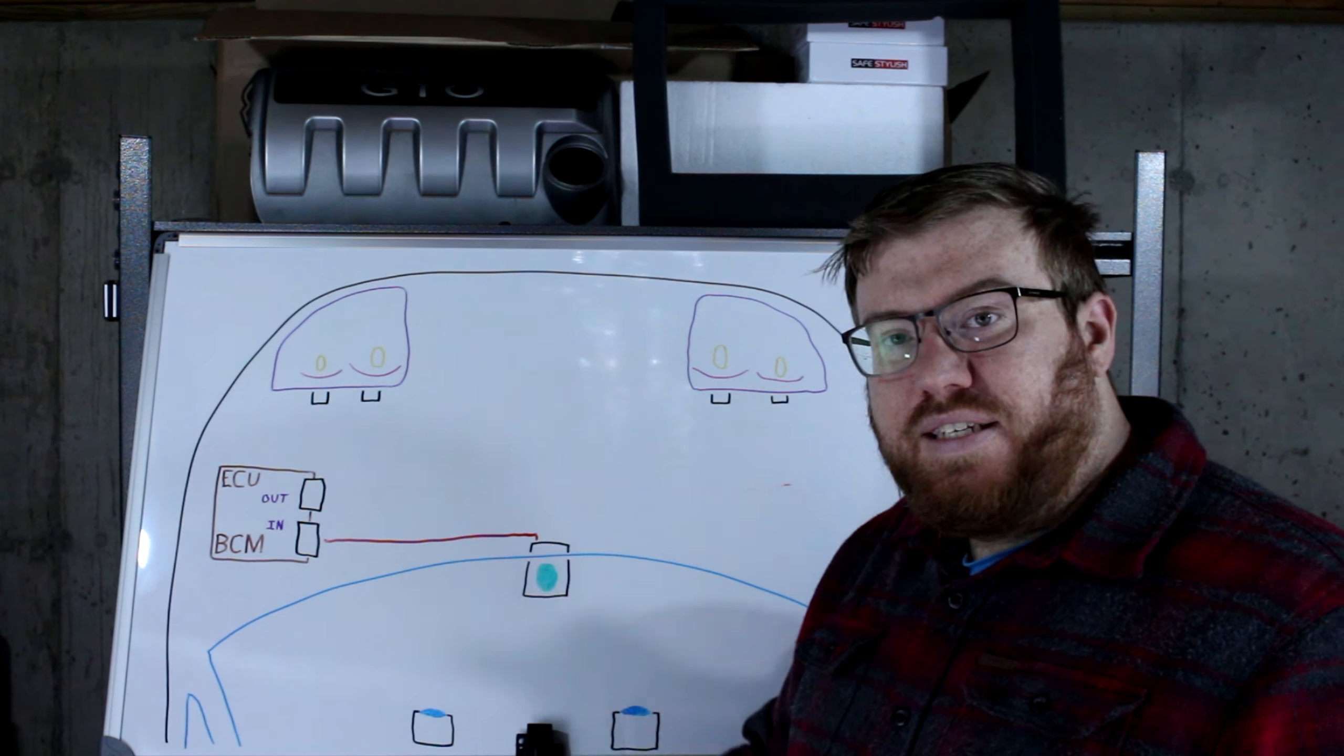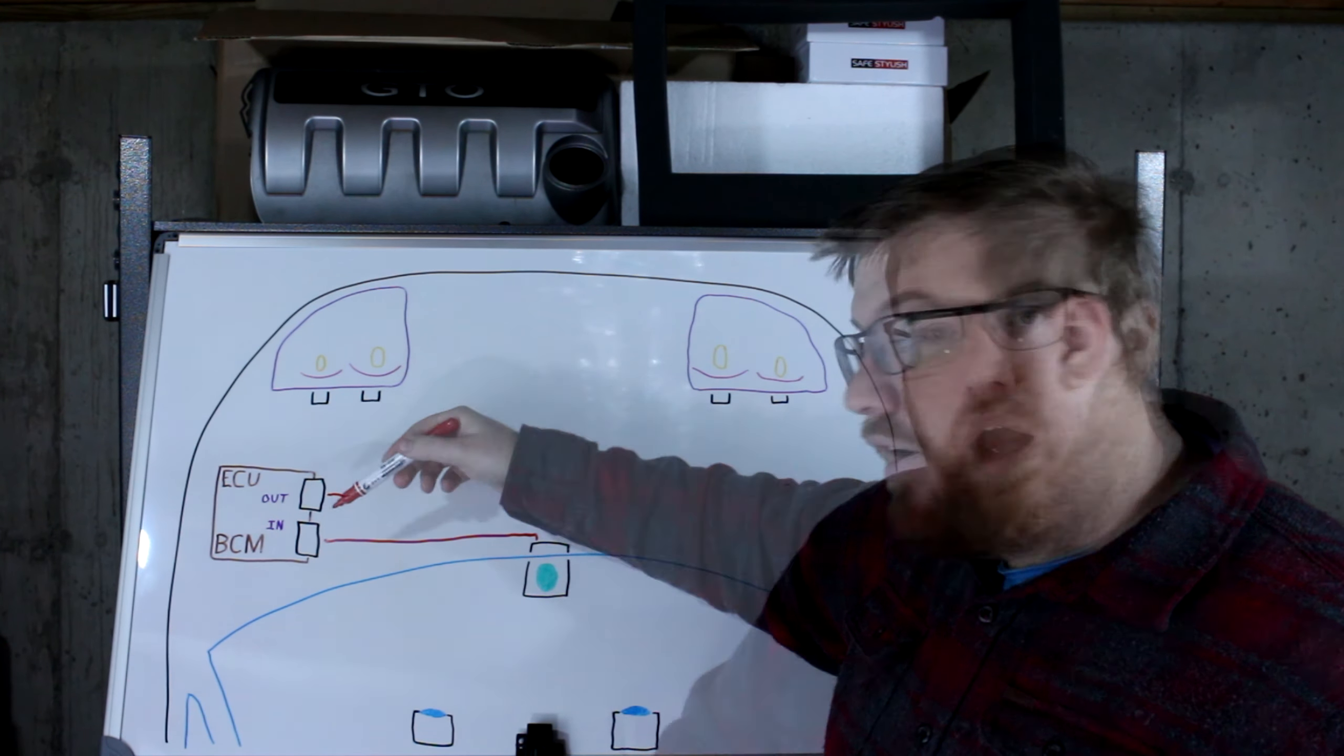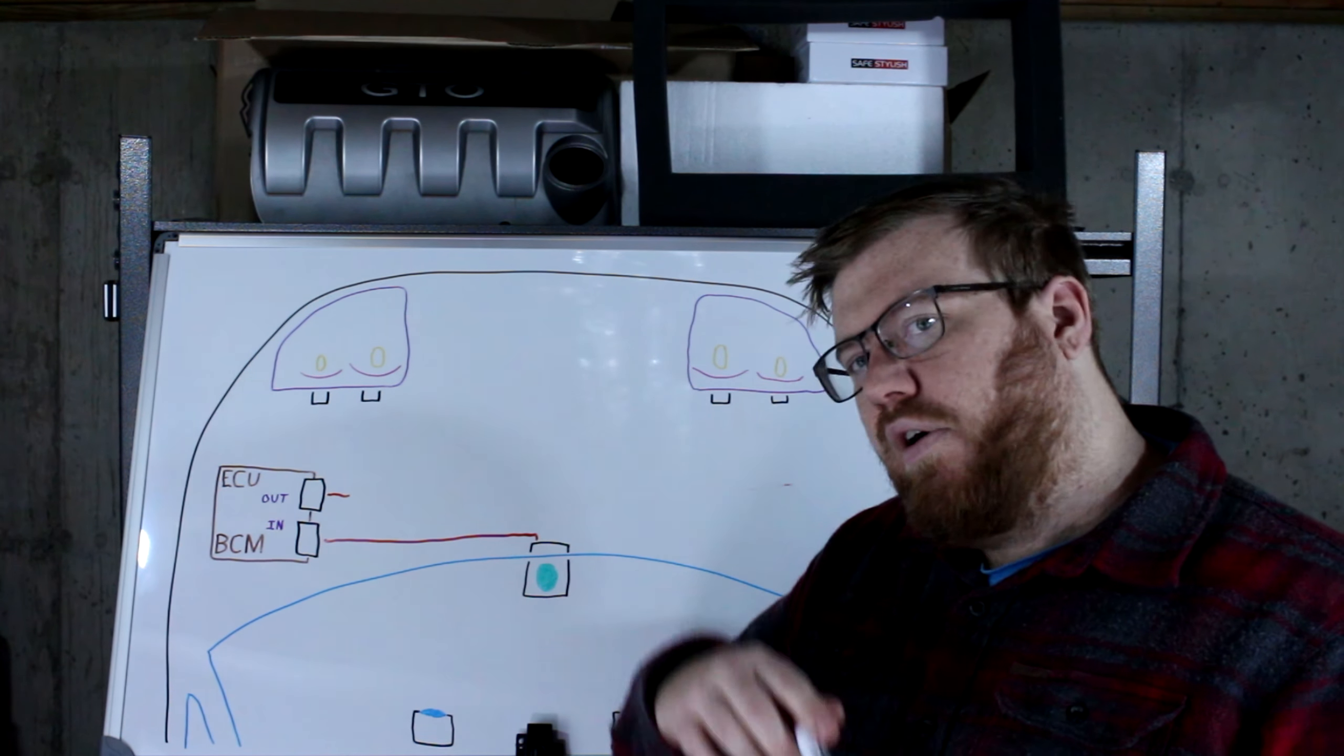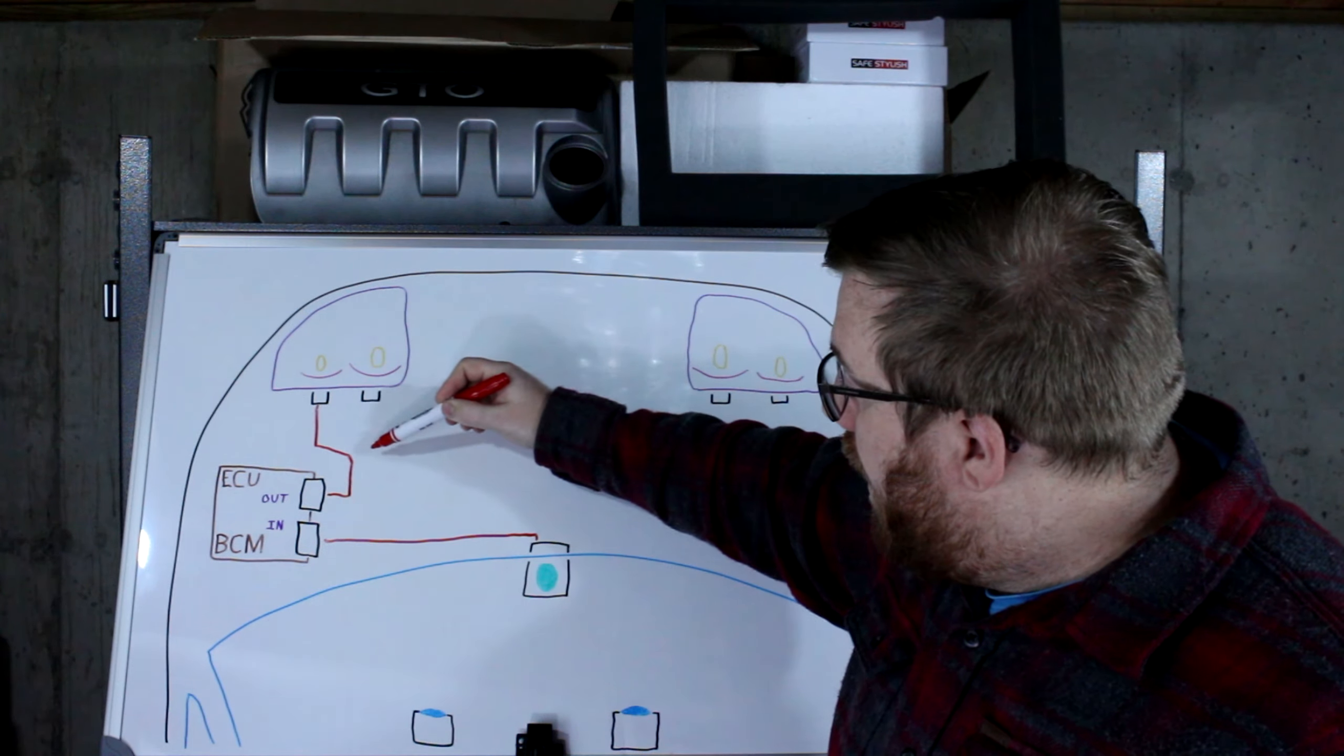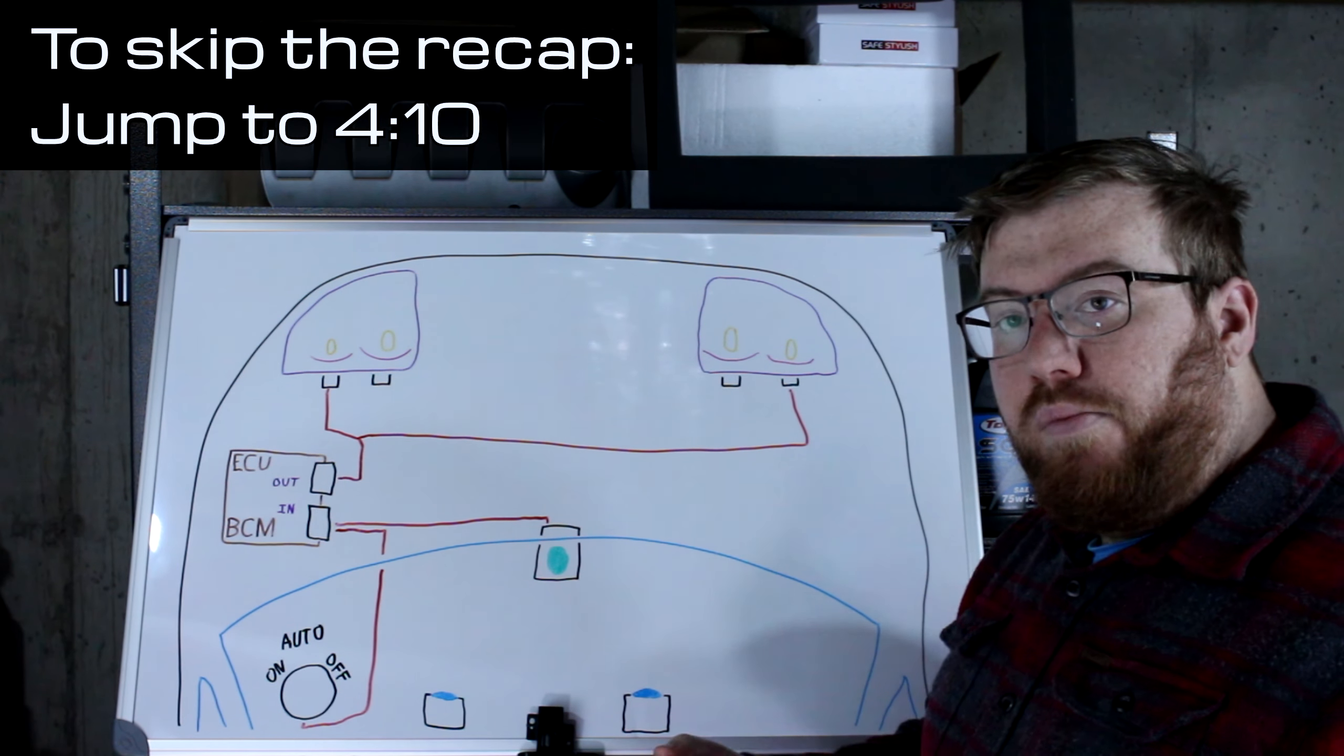Now once this computer has made a decision, it needs to have an output so it can act on that decision. So we have output right here, wire comes out, and technically we'd have a relay right here. I'm not going to assume everyone knows how a relay works, but if you've been subscribed to the channel, you would because I've made a video on it. We're going to simplify it and go to our low beams. I'm just going to draw the switch in here too.